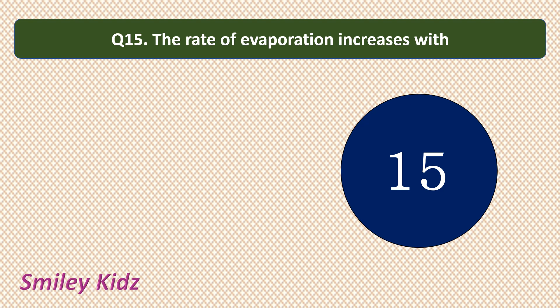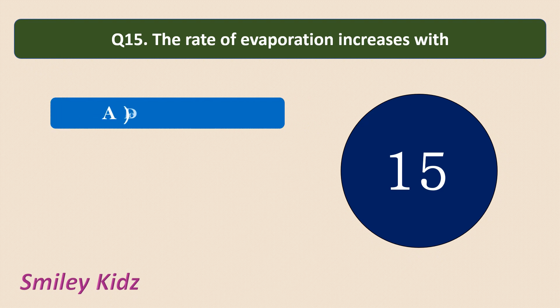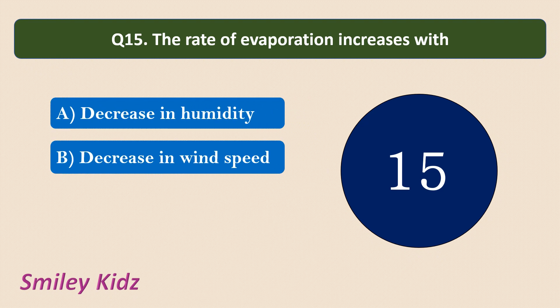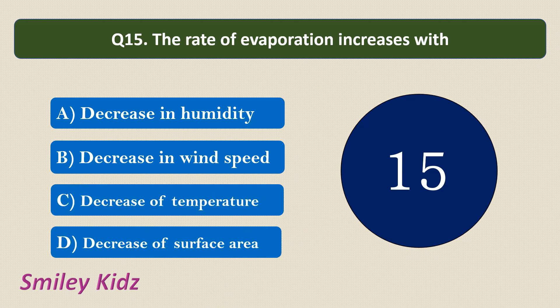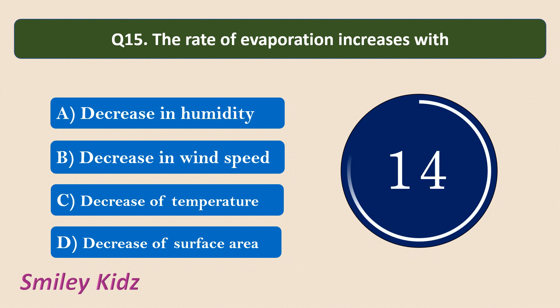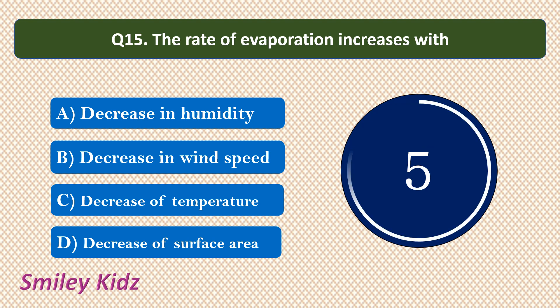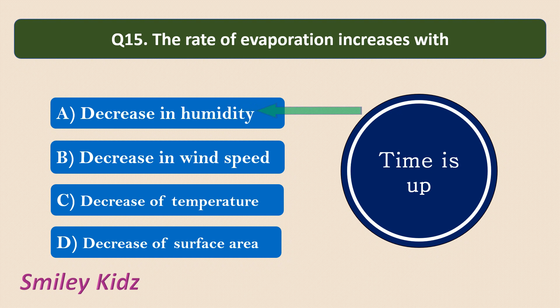Question number 15. The rate of evaporation increases with? Options are: decrease in humidity, decrease in wind speed, decrease of temperature, or decrease of surface area. The correct answer is decrease in humidity. There are four factors which affect the rate of evaporation: surface area, humidity, temperature, and wind speed. Temperature, wind speed, and surface area should be increased to increase the rate of evaporation, whereas humidity should be decreased. So decrease in humidity increases the rate of evaporation.